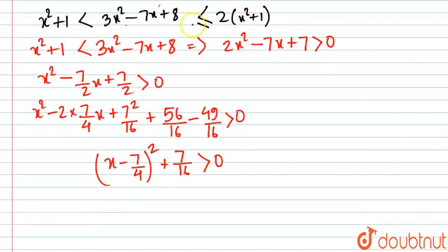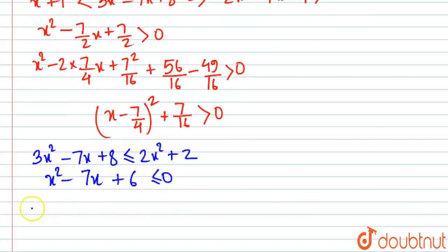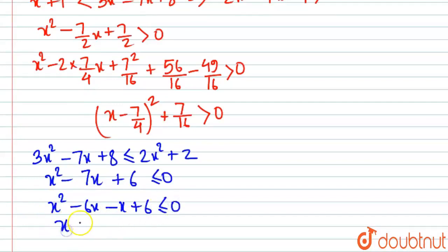Now for the second part: 3x² - 7x + 8 ≤ 2x² + 2. Rearranging gives x² - 7x + 6 ≤ 0. Splitting the middle term: x² - 6x - x + 6 ≤ 0, which factorizes as (x - 1)(x - 6) ≤ 0.